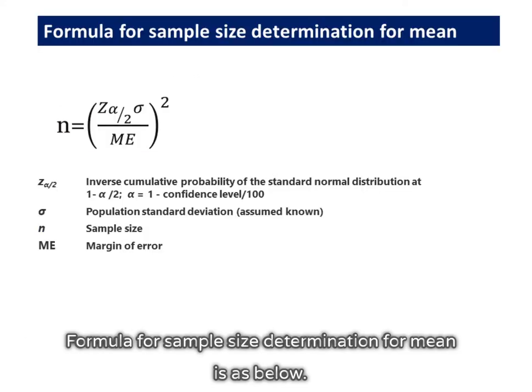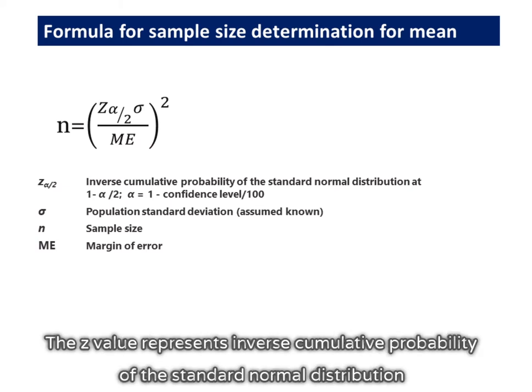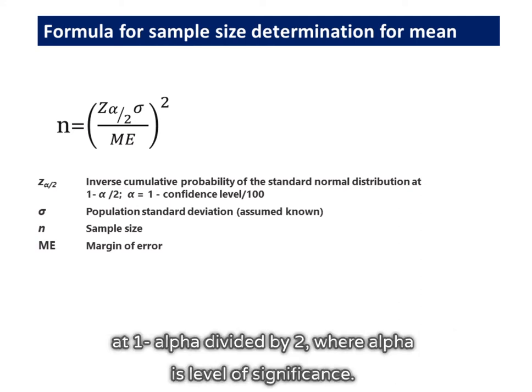Formula for sample size determination for mean is below. The z-value represents inverse cumulative probability of the standard normal distribution at 1 minus alpha divided by 2, where alpha is level of significance.